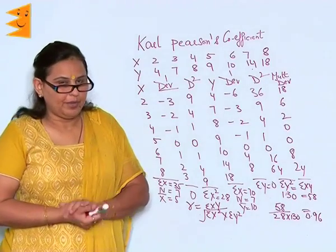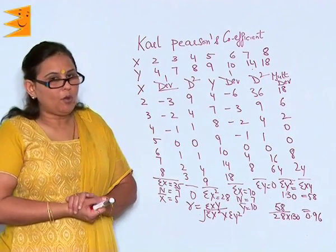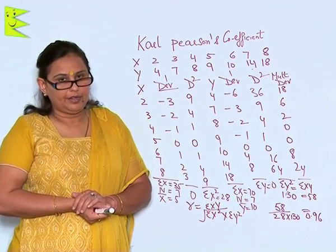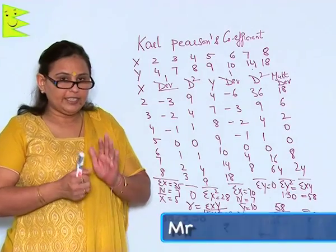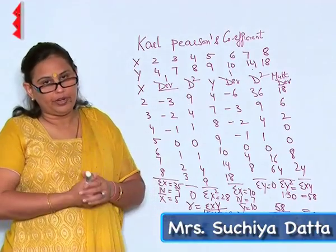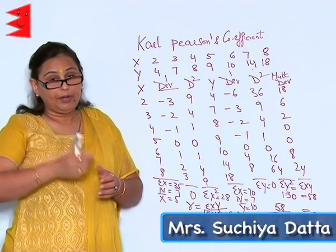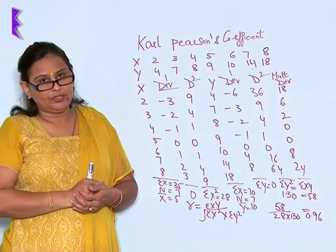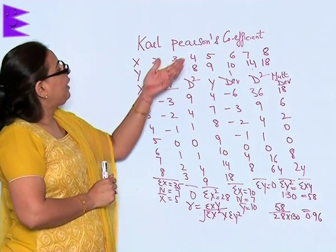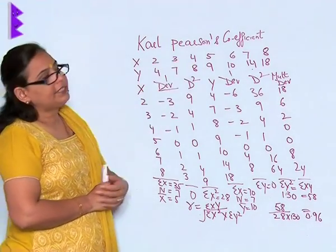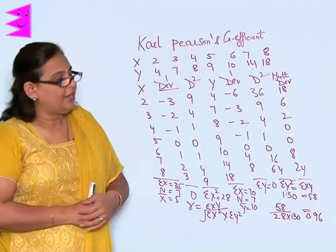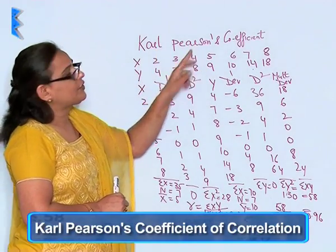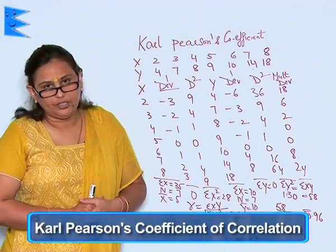In the previous clipping, we spoke about the scattered diagram method, which tells us about the direction of correlation, but not the magnitude of relation. But here, we are going to deal with the second method of correlation, which is called the Karl Pearson's coefficient of correlation.